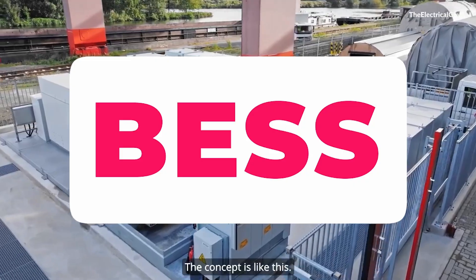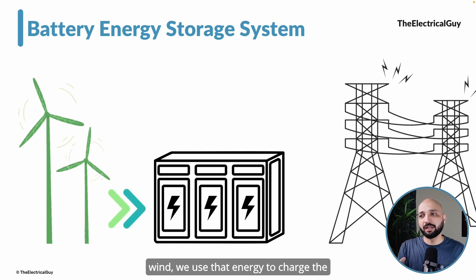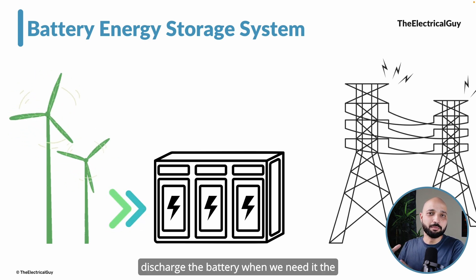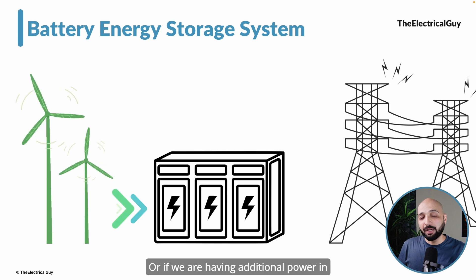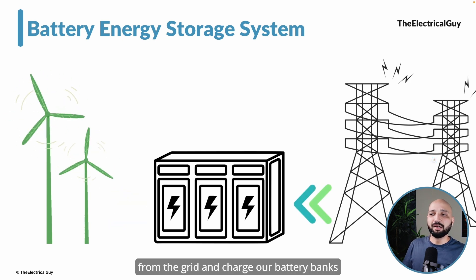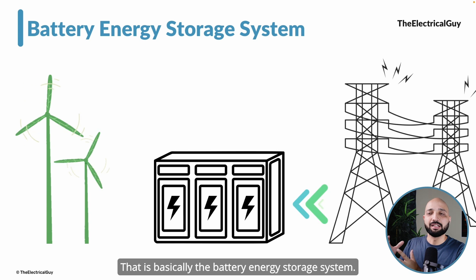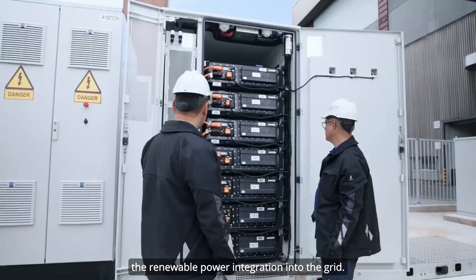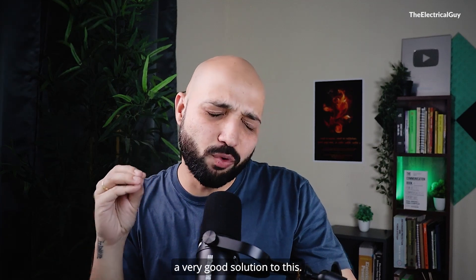The concept is simple. When we have additional power generation from solar or wind, we use that energy to charge the battery and store it, so we can discharge the battery during peak demand. Or if there is additional power in the grid itself, we can take that power from the grid and charge our battery banks for later use. That is basically the battery energy storage system, and it is gaining momentum because of renewable power integration.